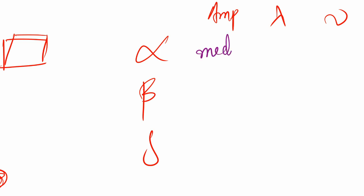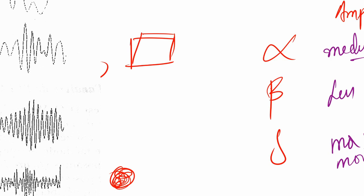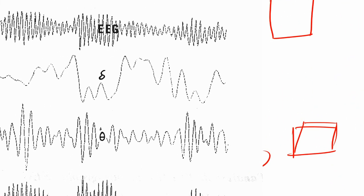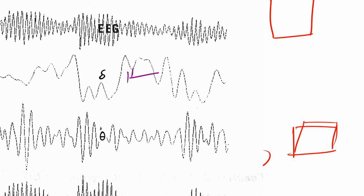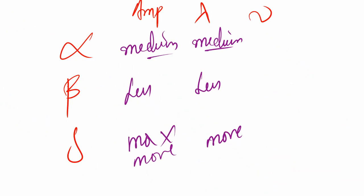Alpha has medium. Beta has less. And delta has the max. Let's say max for now, or more. The wavelength, again, if alpha is the medium, if we take alpha as the reference, the beta will be having less wavelength and delta will be having more wavelengths, because you see that they are bigger. You see delta have bigger wavelength. Distance between two waves is big here compared to alpha. And beta has less. And frequency, it's inversely proportional to the wavelength. So if it's medium, then beta will be having more frequency and delta has less frequency.